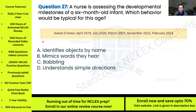Question twenty-seven: A nurse is assessing the developmental milestones of a six-month-old infant. Which behavior would be typical for this age? This has been asked five times. Options: A) identifies objects by name; B) mimics words they hear; C) babbling; D) understands simple directions.